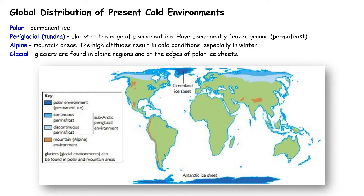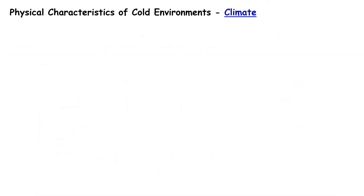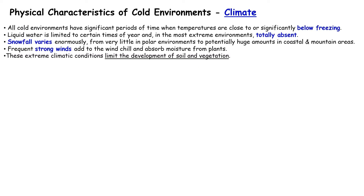In the rest of this presentation we're going to look at the physical characteristics of these modern-day cold environments, to include climate, soils and vegetation. All cold environments have significant periods of time when temperatures are close to or significantly below freezing. There's very little liquid water in these areas because it's ice or snow. Snowfall can vary enormously — there's very little precipitation at all in polar environments, whereas coastal and mountainous areas can get a lot of snowfall. There are often strong winds in these cold environments, and this adds wind chill. All of these conditions limit the development of soil and vegetation.